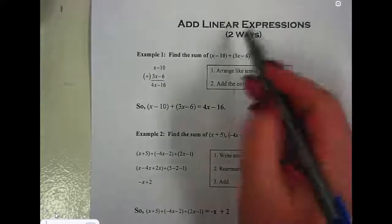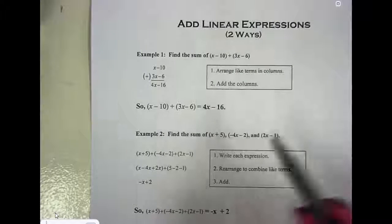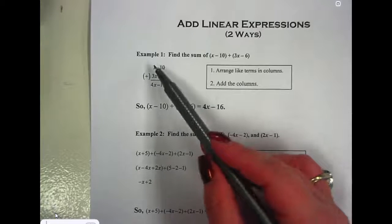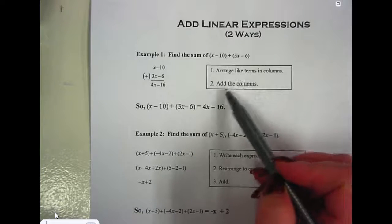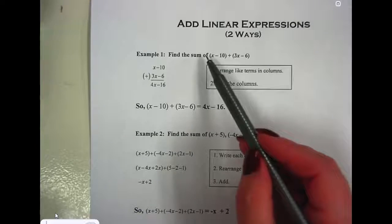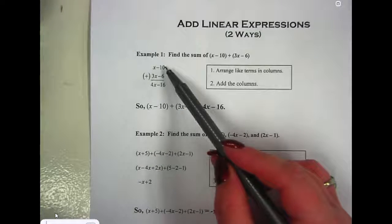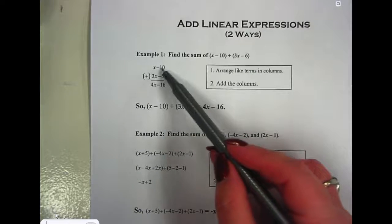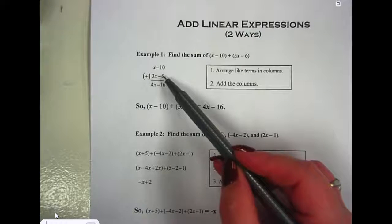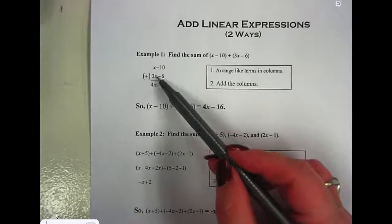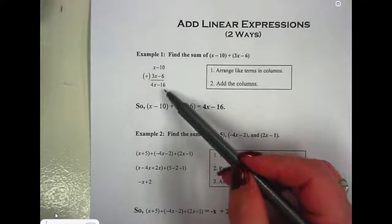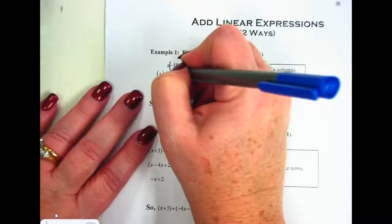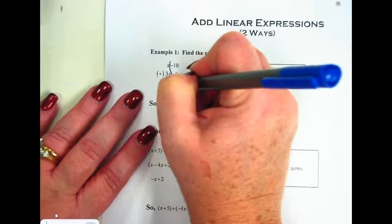So it's really not that different than what we've been doing. There's two different ways to do it. We can arrange the terms in columns and then add the columns. So I could rewrite this as x minus 10, and then I could line this up underneath it. To the negative 10 I'm going to add negative 6, and to the x I'm going to add 3x. Make sure that you realize that that negative sign goes with that second term.